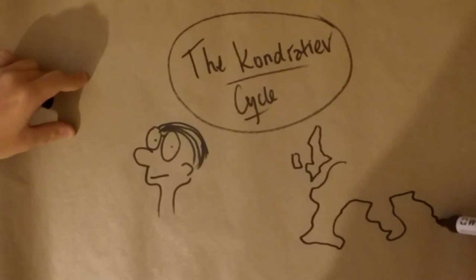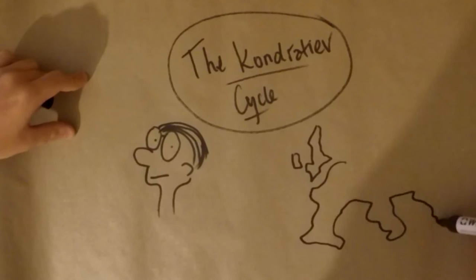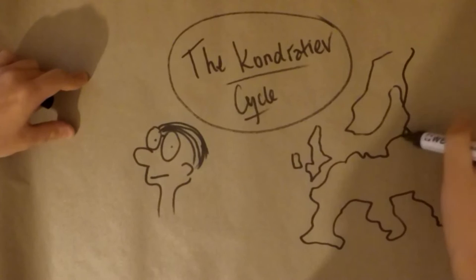The Kondratiev cycle is similar to the economic cycle that we've learnt in previous lessons. It presents fluctuations in the rate of economic growth over time and it has the same features of recovery, boom, downturn and slump.